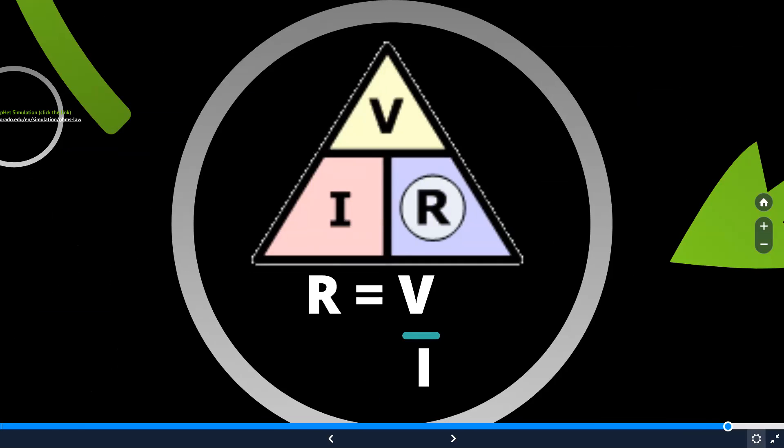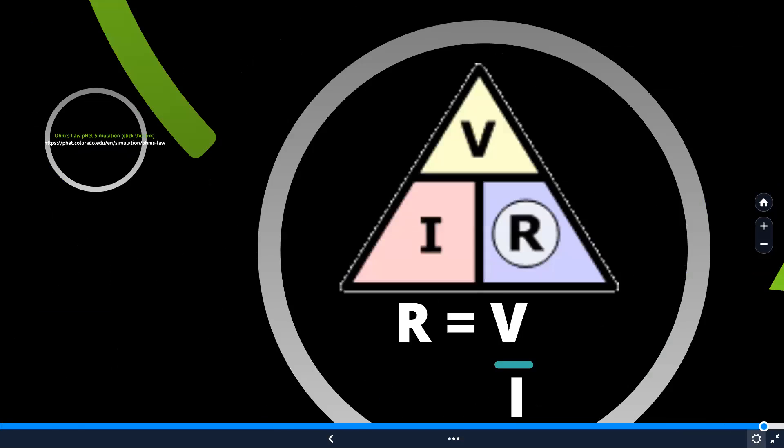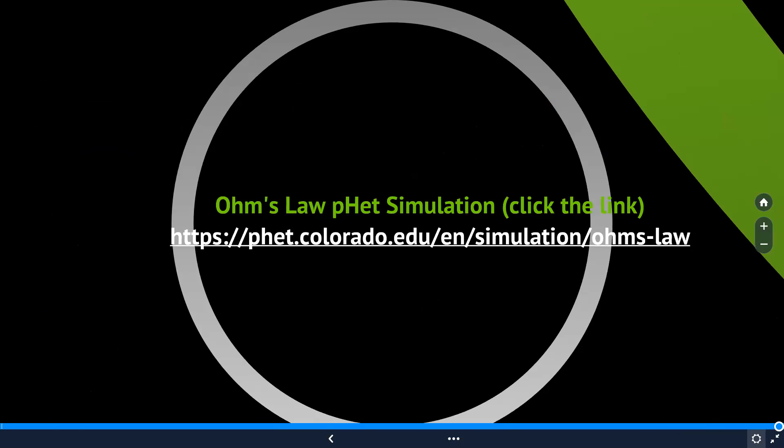Hope you understood what is Ohm's law. It is a very simple concept. It relates potential difference, current, and resistance. Mathematical expression is V is equal to I into R. You can see a stimulus in order to understand Ohm's law better. Let me show you what is a stimulus for that.